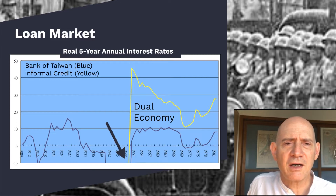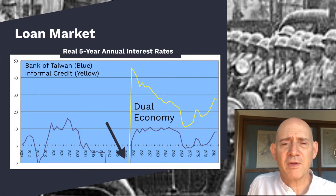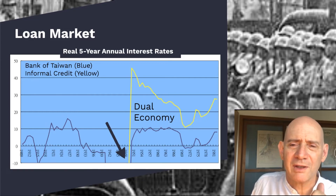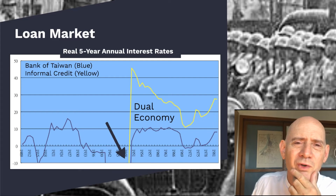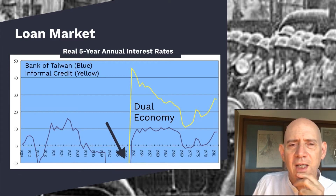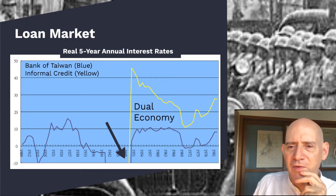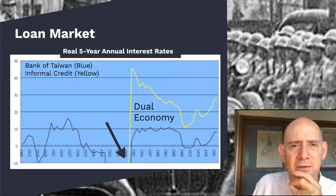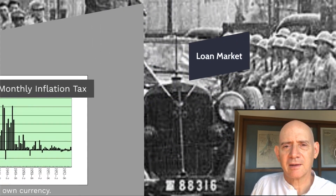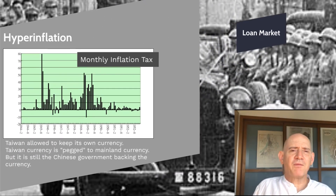This is the dual economy, the dual finance. If you can get money from the Bank of Taiwan, you're going to get money at rates that aren't great, but okay — you can function. If you can't get money from the banks, you're going to have to pay lots and lots of money to get anything. The hyperinflation really wipes out Taiwan financially.